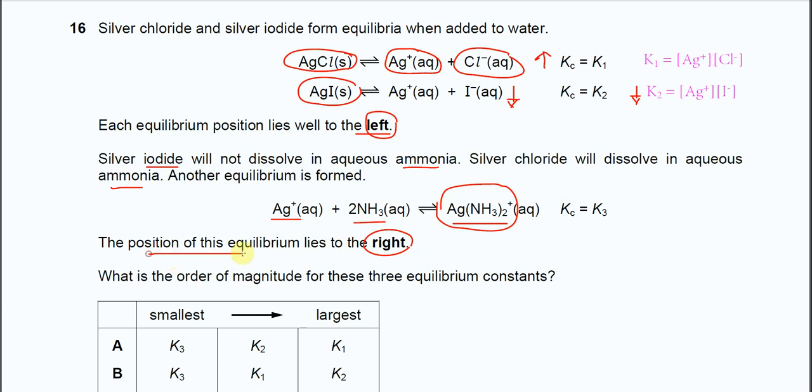When it's to the product side, the KC value is very high. Therefore we know that the order of magnitude must be K3 first, then K1, then K2 is the smallest.